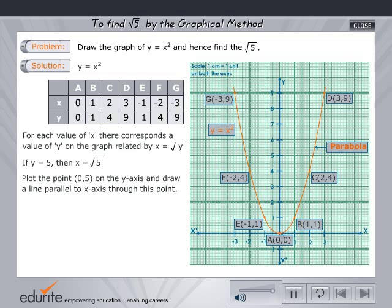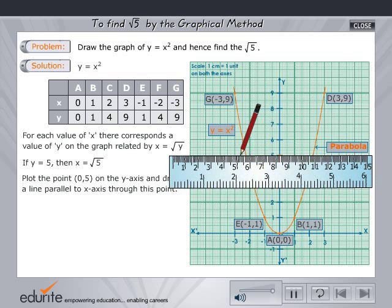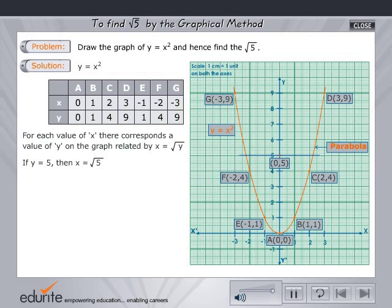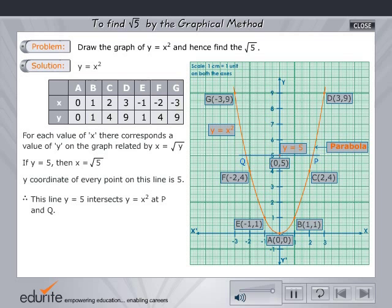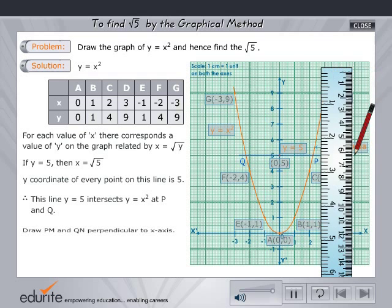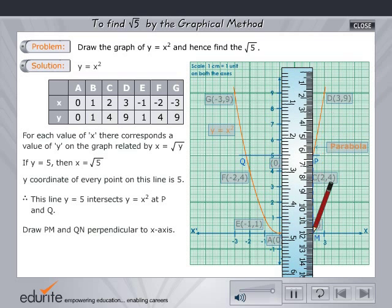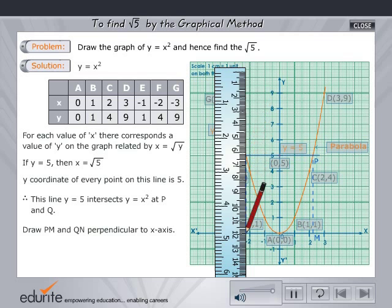Plot the point 0,5 on the y-axis and draw a line parallel to the x-axis through this point. The y-coordinate of every point on this line is 5. Therefore, this line y equals 5 intersects y equals x squared at P and Q. Now draw PM and QN perpendicular to the x-axis.